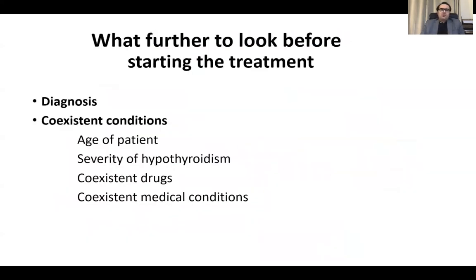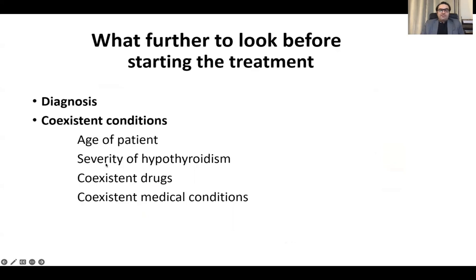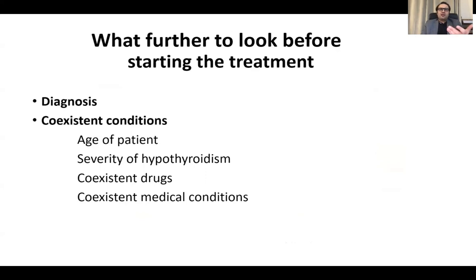Before starting treatment, we need to know: is it primary or secondary, what is the cause, and what are the co-existent conditions? Age of the patient is important — if elderly with comorbidities, starting therapy with a low dose is wiser. Severity of hypothyroidism in terms of TSH matters — subclinical versus overt, and a very high TSH will require a full dose of thyroxine. Co-existent drugs and medical conditions like cardiac disease or osteoporosis should also be known.